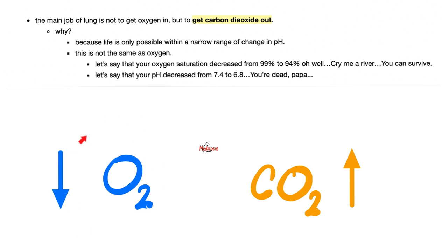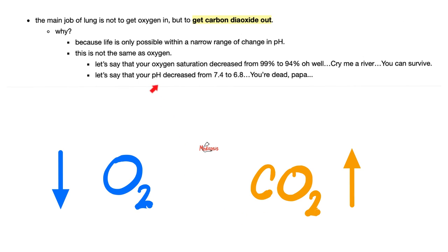The lung has many functions, including getting oxygen into your body and removing carbon dioxide. The question is, which one is more important? Getting carbon dioxide out is way more important than getting oxygen in. Let's say your oxygen saturation decreased from 99% to 94% — your red blood cells are carrying less oxygen. In real life, you can survive that. But carbon dioxide is responsible for the pH of your body. If the pH decreased from 7.4 to 6.8, you're gone. If it increased to 8.2, you're in serious trouble. Carbon dioxide influences the pH of your blood.